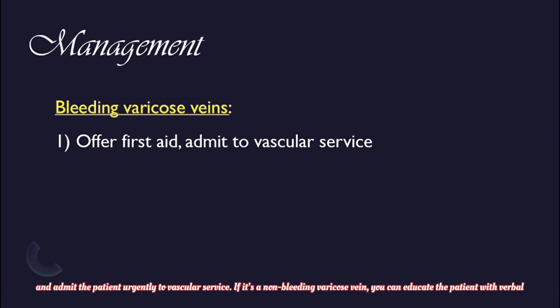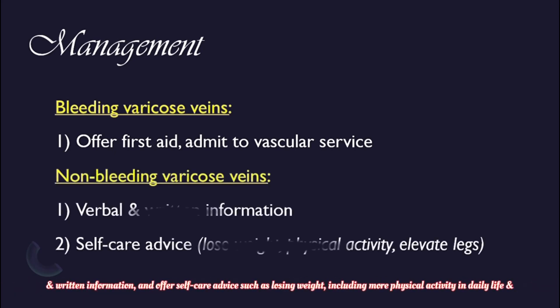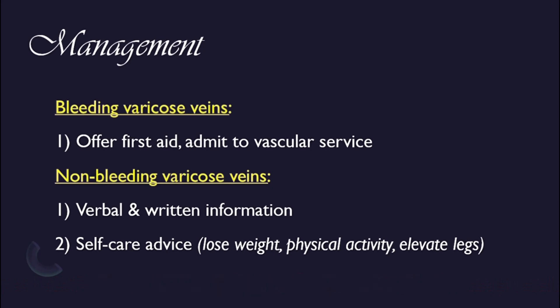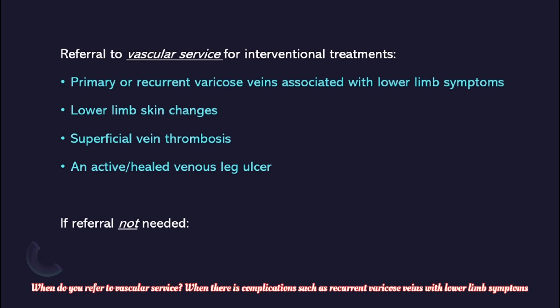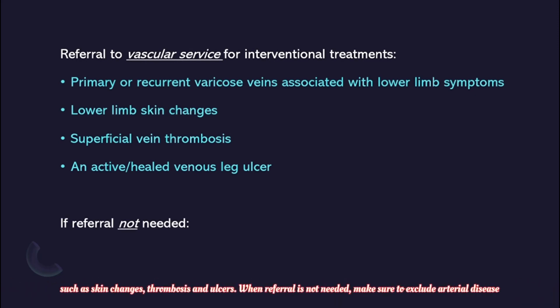Management is based on whether the varicose veins are bleeding or non-bleeding. If it's a bleeding varicose vein, offer first aid, stop the bleeding, and admit the patient urgently to vascular services. If it's not bleeding, educate the patient with verbal and written information and offer self-care advice such as losing weight, including more physical activity in daily life, and elevating legs at night to allow better circulation. Refer to vascular services when there are complications such as recurrent varicose veins with lower limb symptoms, skin changes, thrombosis, and ulcers.